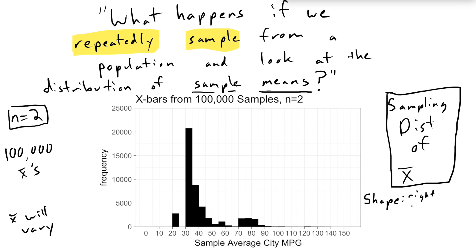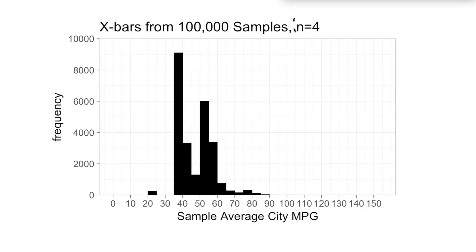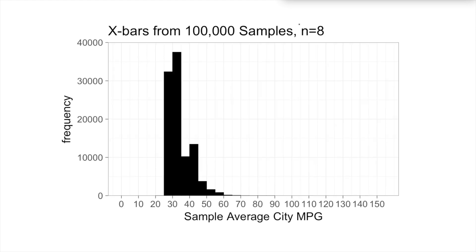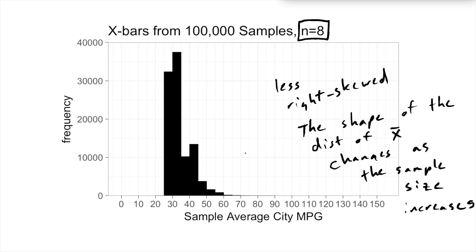When our samples are size 2, the shape is right skewed. Let's look at what happens if we increase the sample size. Here is a graph where the sample size is twice as big — there are 100,000 x-bars in this histogram, and it's still right skewed. Let's double the sample size again — now we're looking at samples of size 8. You'll notice it's a little less right skewed. The important thing to notice is that the shape of the distribution of x-bar changes as our sample size changes. The sample size matters.